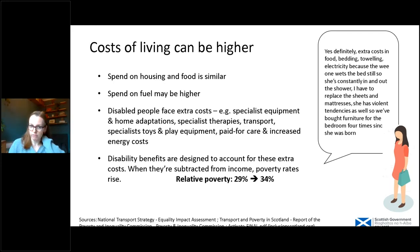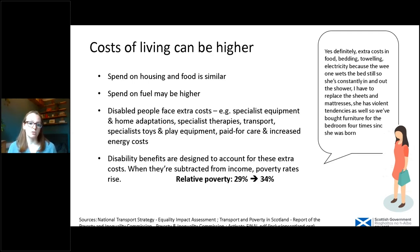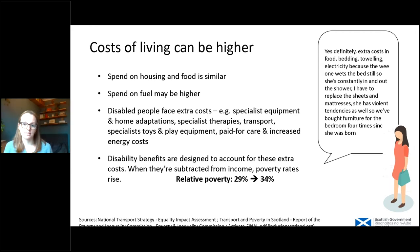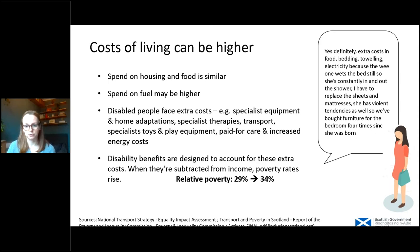Moving on to cost of living — our second driver. Spend on housing and food for families where someone's disabled is broadly similar to other families, but spend on fuel can be higher. Overall, disabled people face a whole range of extra costs which can vary hugely in type and amount between families. For example, one person we interviewed described having to buy extra food, bedding, towelling and electricity — her child was wetting the bed so she was constantly laundering sheets and replacing mattresses, and violent tendencies also meant replacing furniture. This illustrates the very broad range of things people can have to pay more for.